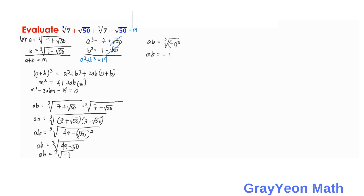Knowing that ab equals negative 1, we substitute into our equation: m cubed minus 3 times negative 1 times m minus 14 equals 0, which simplifies to m cubed plus 3m minus 14 equals 0.